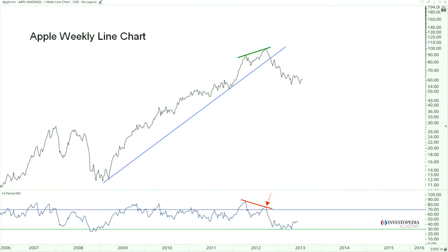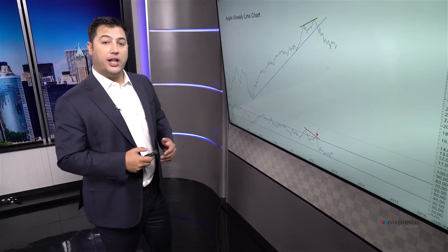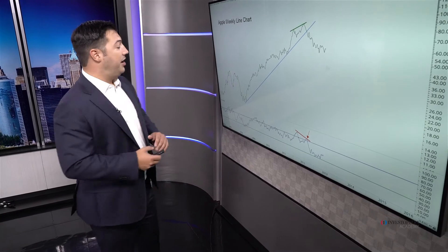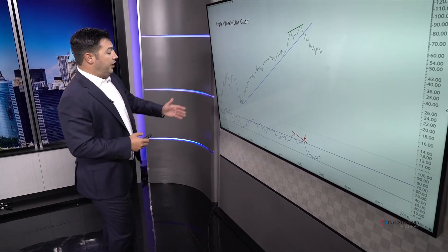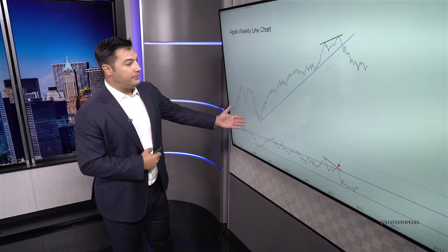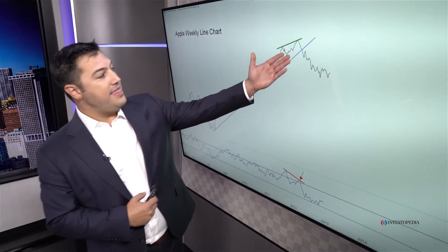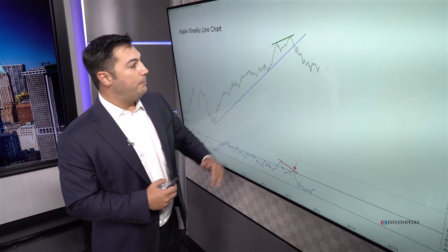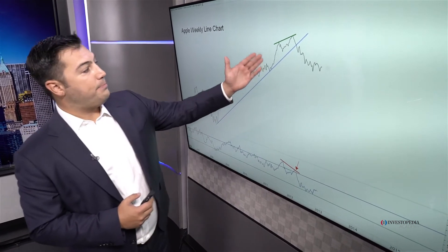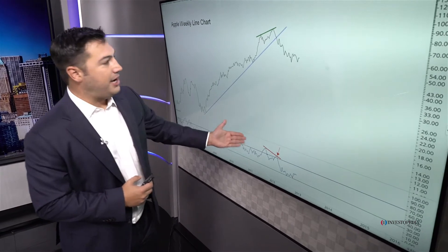One of my favorite examples is Apple in 2009 through 2012. This was an epic top in shares of Apple that started a pretty substantial decline — temporary, but a decline nonetheless. There was a beautiful uptrend from the lows in early 2009, touched again in 2011, and then the trend line broke. But what happened prior to this trend line breaking? We had a bearish momentum divergence.